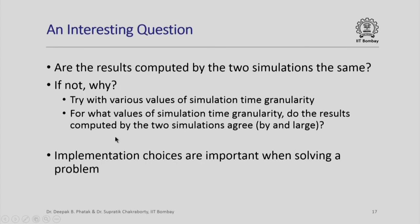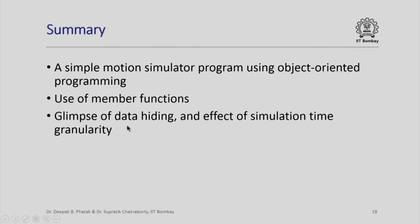An interesting question is whether the results computed by the two simulations are the same. You are encouraged to try it out, and if the results differ, to ask why — particularly by trying various values of simulation time granularity to see for what values the two simulations agree. This illustrates why implementation choices are important. When simulation time granularity is large, the second implementation will be inaccurate, while the first implementation is accurate for any value of delta t. In summary, we saw a simple motion simulator using object-oriented programming, use of member functions, a glimpse of data hiding — where current_velocity is never seen by the main program — and the effect of simulation time granularity on simulation results.